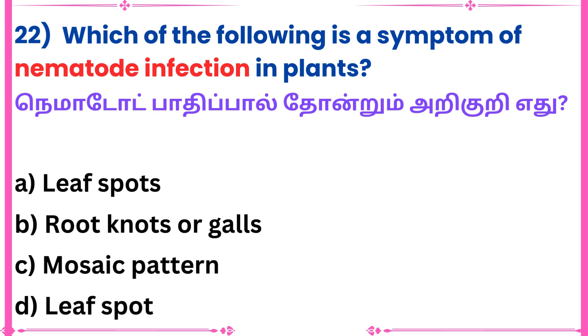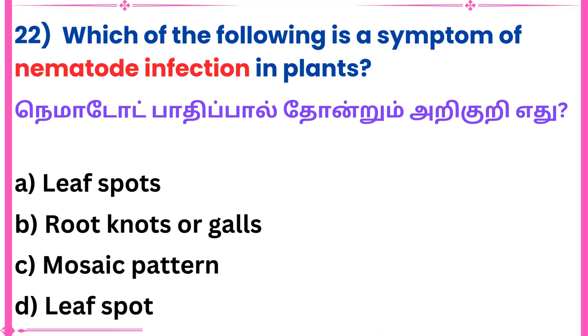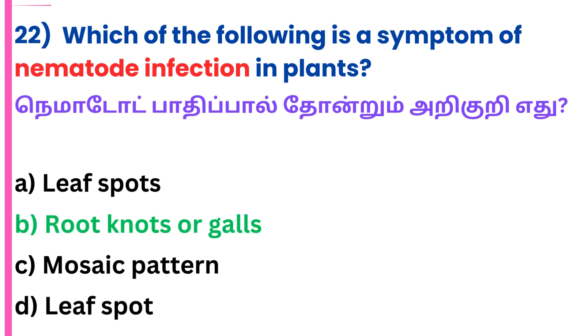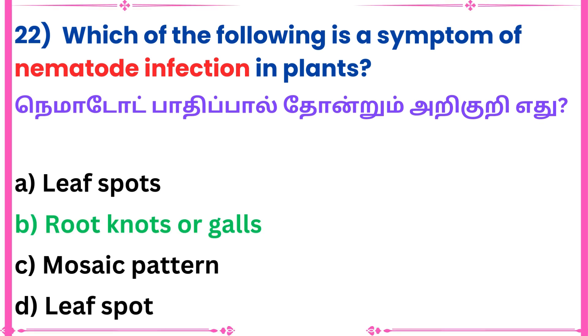Question 22: Which of the following is a symptom of nematode infection in plants? Answer: Root knots or galls.